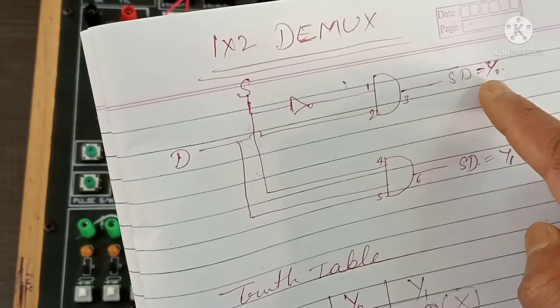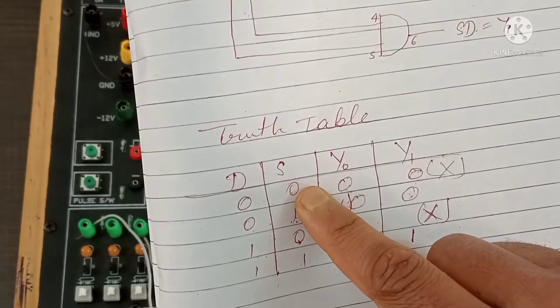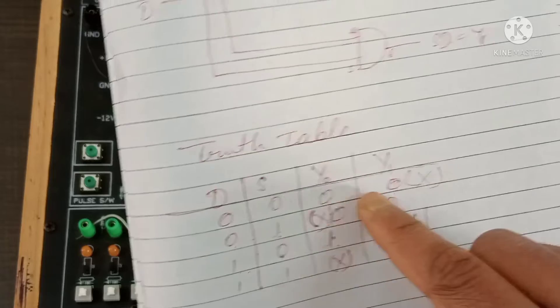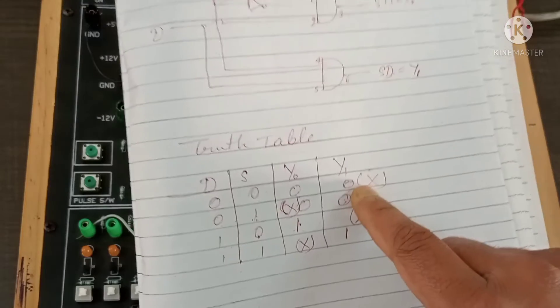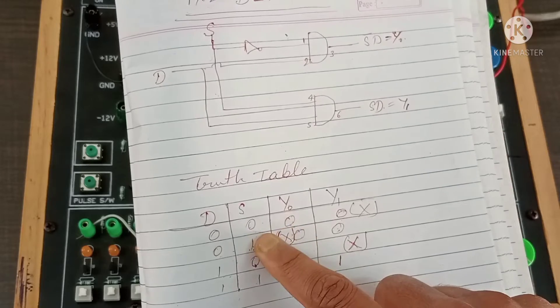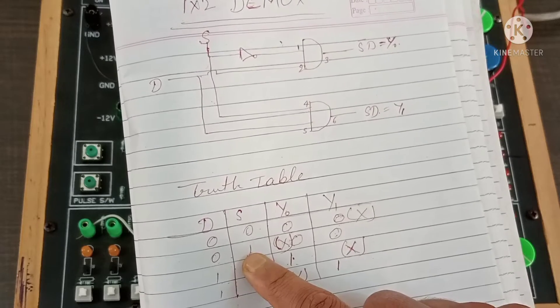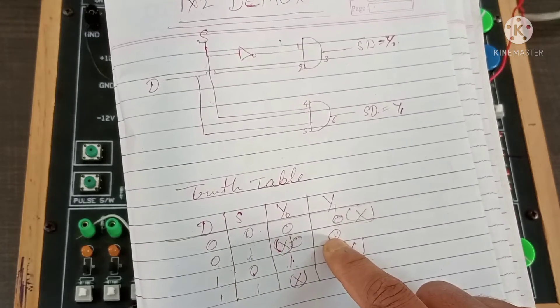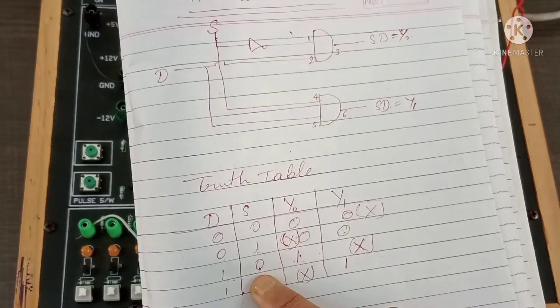When S is zero, data will come to Y0. That's why Y1 is crossed out in the truth table — Y1 doesn't matter when S is zero. When S is one, data will go to Y1, so Y0 is crossed out in that case.